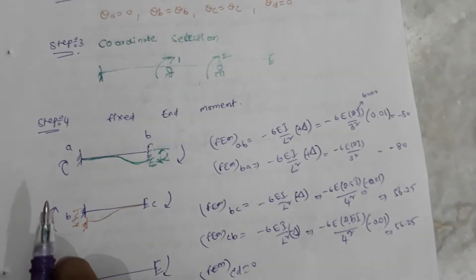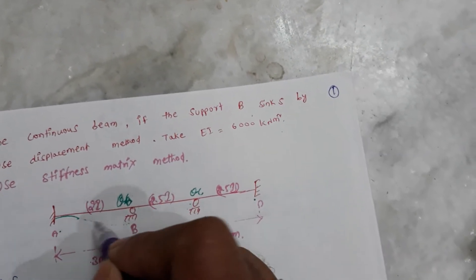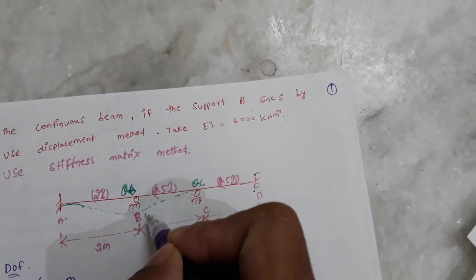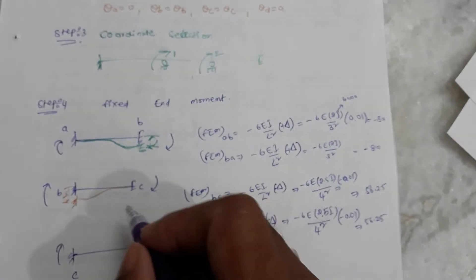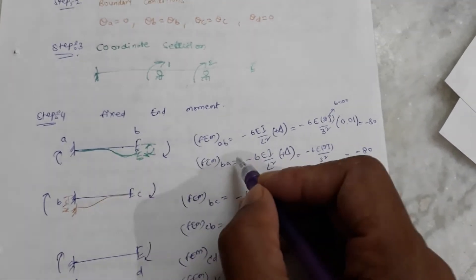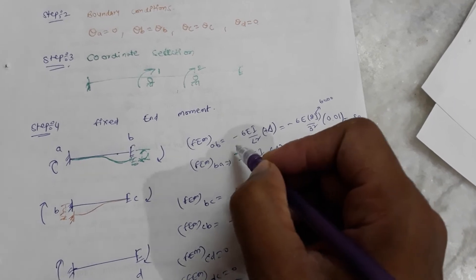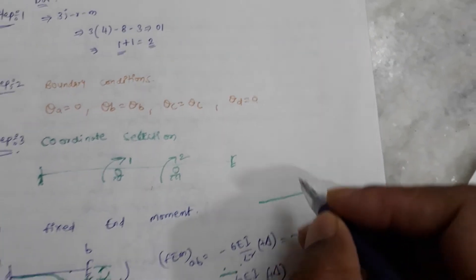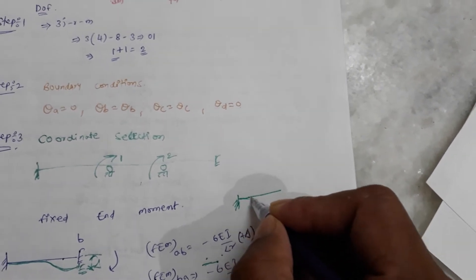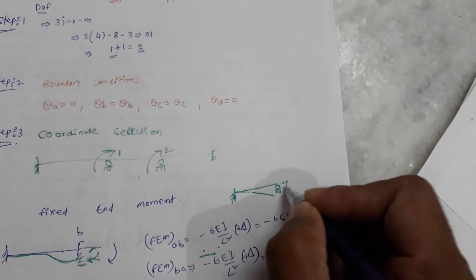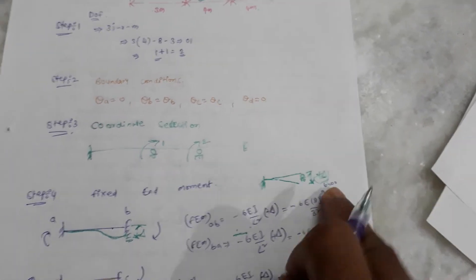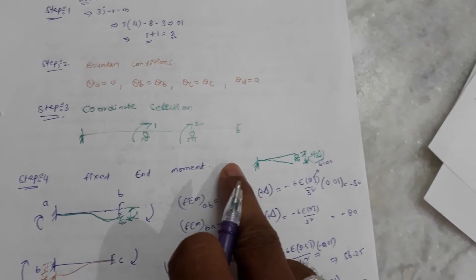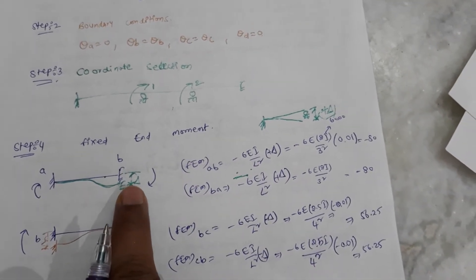Since support B sinks by 10 mm and there is no external loading, the fixed-end moments arise only from the settlement. The formula is 6EI·delta / L². Our sign convention: if the far end settles downward relative to the near end (positive delta, measured with respect to the left-hand side), we take it as positive delta.